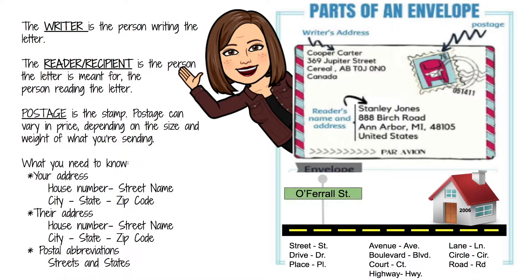Now take a look at how the address is laid out. You have the person's first name and their last name, then their house number and the name of the street — street, road, circle, lane, boulevard. You have the name of the city followed by a comma, then the abbreviation for the state also followed by a comma, and that is followed by the zip code. You don't have to put "United States" unless you are sending it from a different country. So Cooper Carter is sending this from Canada to the United States, which is why they put United States. But if you're sending a letter to your Memaw who lives in Florida, you do not have to put United States.